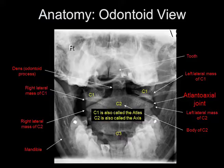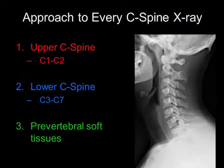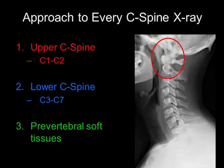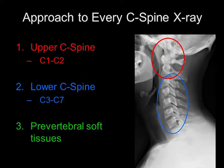C1 is also called the atlas, and C2 is also called the axis. In terms of an approach to every cervical spine x-ray, the upper cervical spine should be looked at separately — this is the C1-C2 region. Next, the lower C-spine should be looked at separately, and this is the C3 to C7 region.